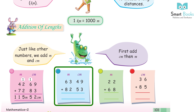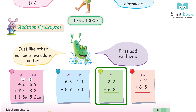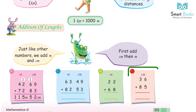63 m 49 cm + 82 m 53 cm = 146 m 2 cm. 22 m + 68 m = 90 m. 36 cm + 85 cm = 121 cm.